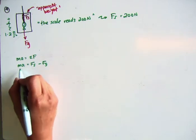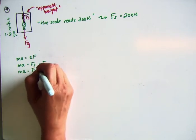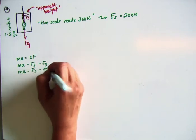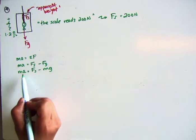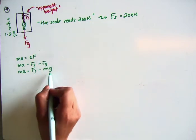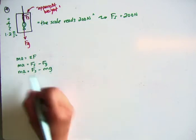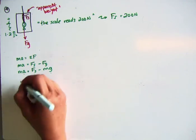So, I don't know m, do I? But I can say, ma equals fs minus mg. So, if you think about it, I know a, 1.2, I know the spring force, it's 200, and I know g, it's 9.8. So my only variable that's unknown is m, so I'm just going to rearrange this to solve for m.